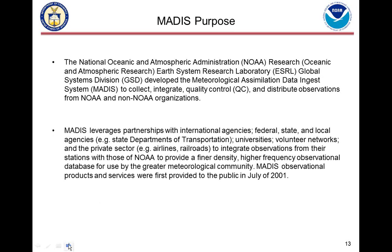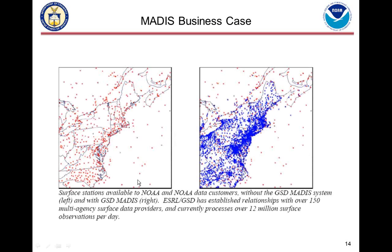MADIS was developed to integrate, quality control, and distribute observations, leveraging all the observations far beyond what NOAA alone provides — basically one-stop shopping for all observations across the country. This gives us a far higher resolution of observations than we would have with only NOAA observations or just one particular mesonet. Here is an example showing just NOAA observations on the left versus all MADIS data sets on the right — it's at least an order of magnitude higher resolution.